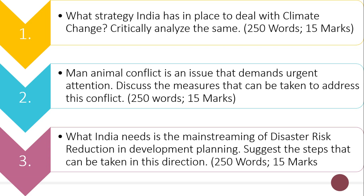The third question is: what India needs is the mainstreaming of disaster risk reduction in development planning — discuss the steps that can be taken in this direction. You have to focus on why it is necessary to mainstream disaster risk reduction in development planning and how it can be done. The word limit is 250 words and the maximum marks are 15.